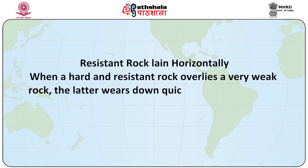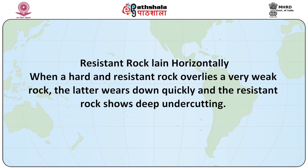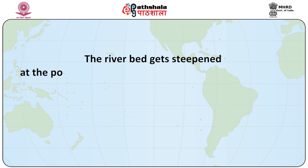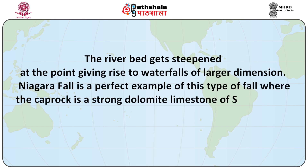Formation of waterfalls due to structural variation: waterfalls form when resistant rock is laid horizontally. When a hard and resistant rock overlies a very weak rock, the latter wears down quickly and the resistant rock shows deep undercuttings. The river bed gets steepened at that point, giving rise to waterfalls of larger dimension. Niagara Falls is a perfect example of this type, where the cap rock is a strong dolomite limestone of Silurian age. The inclination of the resistant rock determines the nature and size of the waterfall. If the overlying hard rock dips downstream, it results in the formation of rapids, a waterfall of smaller dimension. When it dips upstream, it gives rise to a precipitous wall and a relatively large waterfall.